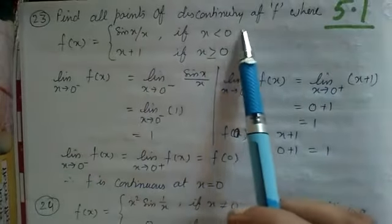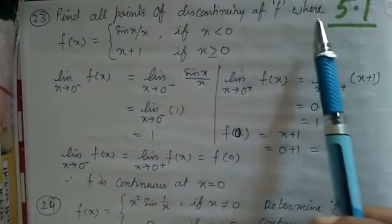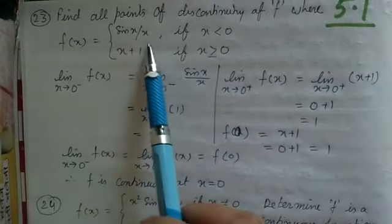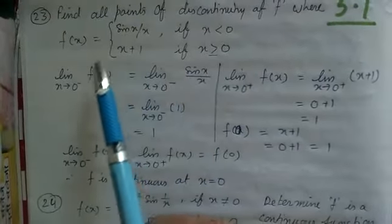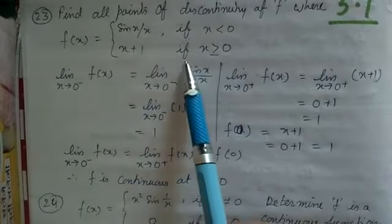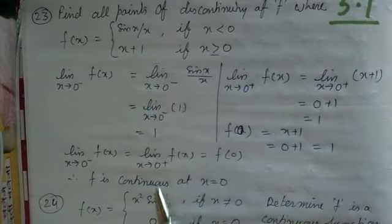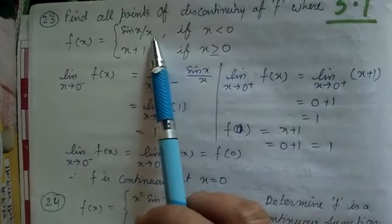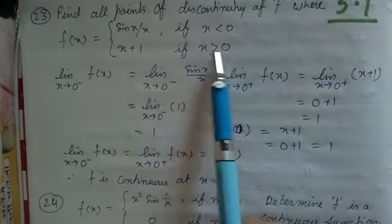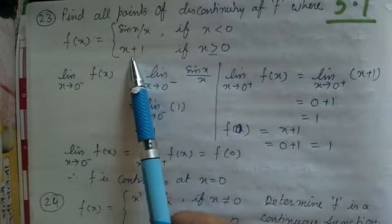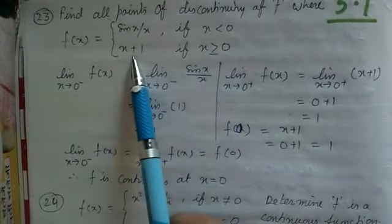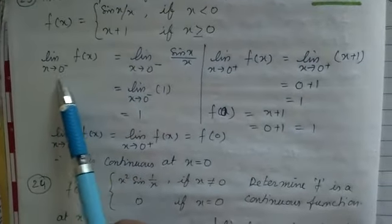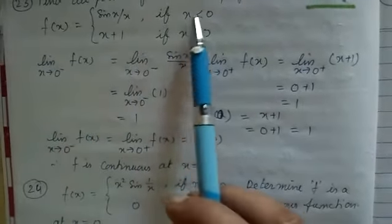Find the points of discontinuity of the function, where f(x) = sin(x)/x if x is less than 0, and x+1 if x is greater than or equal to 0. For the left-hand limit you will use sin(x)/x, and for the right-hand limit and at the point you will use x+1.